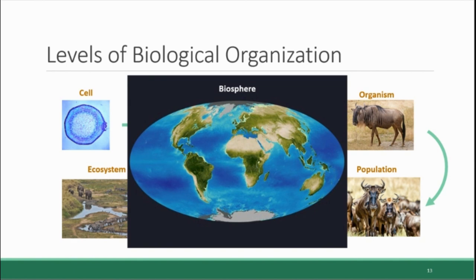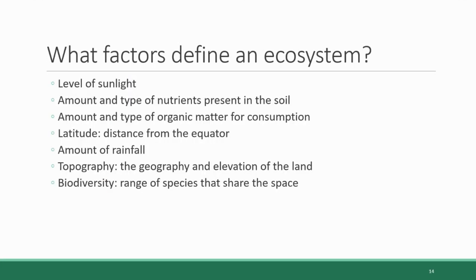The broadest, most encompassing level of organization is the biosphere, which is synonymous with Earth itself. It includes all of the ecosystems on Earth, all of the land, all of the water, all the things that live on and in it, and even parts of the atmosphere. But tackling the whole biosphere is a bit of a handful, so let's take one step back and focus on just ecosystems instead.